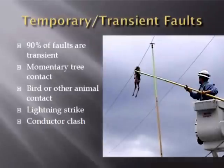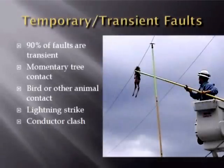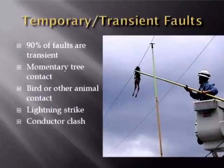A transient fault is a fault that is no longer present if power is disconnected for a short time. Many faults in overhead power lines are transient in nature. At the occurrence of a fault, the power system protection operates to isolate the area of the fault. A transient fault will then clear and the power line can be returned to service. Typical examples of transient faults include momentary tree contact, bird or other animal contact, lightning strike, and conductor clash.